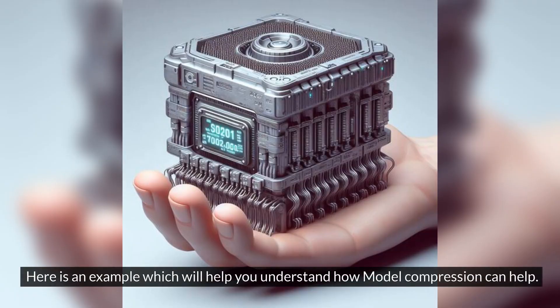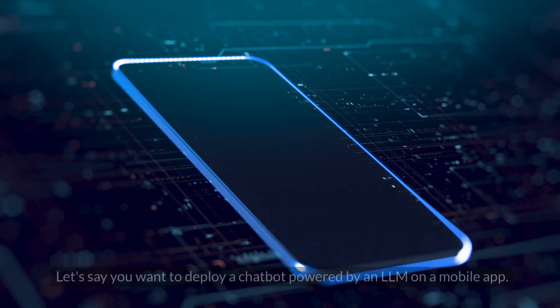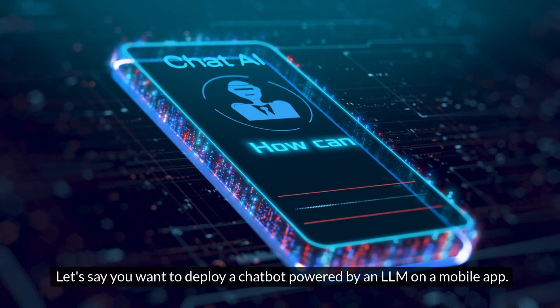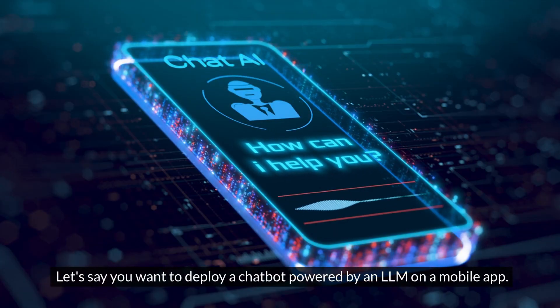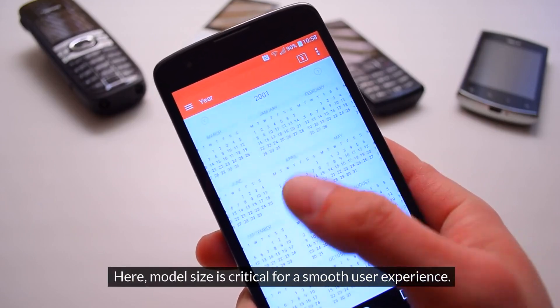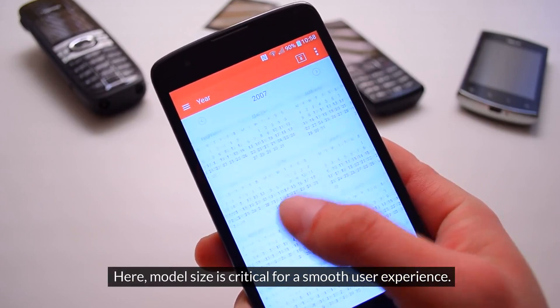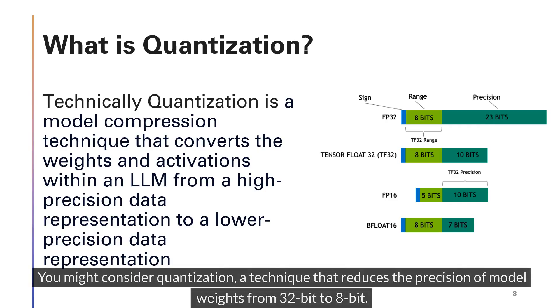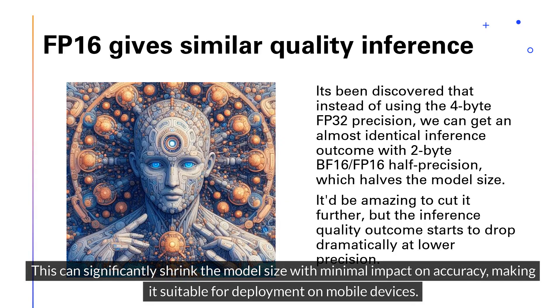Here is an example to help you understand how model compression can help. Let's say you want to deploy a chatbot powered by an LLM on a mobile app, where model size is critical for a smooth user experience. You might consider quantization, a technique that reduces the precision of model weights from 32-bit to 8-bit. This can significantly shrink the model size with minimal impact on accuracy, making it suitable for deployment on mobile devices.